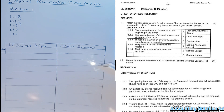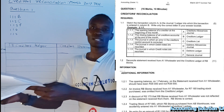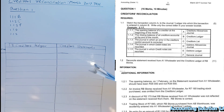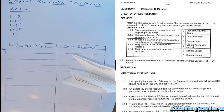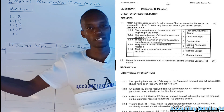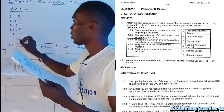For 1.1.4, the journal in which debit notes are recorded — the answer is A, the creditors allowance journal. When we talk about a debit note, it means we have returned something to our supplier. A credit note is when a customer returns to us. So the creditors allowance journal records all items we return to suppliers. For 1.1.5, the journal in which credit notes are recorded — since a credit note means a customer returns to us, the answer is D, the debtors allowance journal.